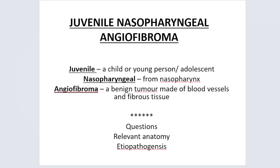Hi everyone. Today we are going to talk about juvenile nasopharyngeal angiofibroma. It is an important topic and many questions have been asked. In this part one, we are going to talk about the relevant anatomy — because that is important to understand the symptoms — how the symptoms and signs come, what will be your investigation modalities and treatment approach. We are also going to talk about etiopathogenesis in this part one.